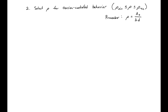Our next step is to select a reinforcement ratio rho for tension-controlled behavior. This means we're going to select a rho between our rho_min specified by ACI and our rho_tension_controlled. Remember that our rho tells us how much reinforcement we will use or need in our section.